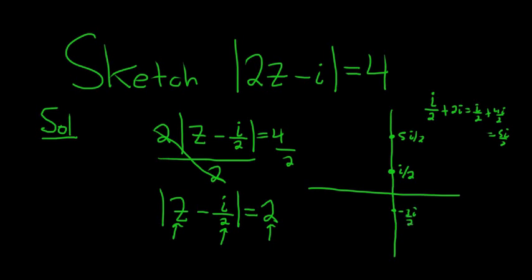And then you can go left and right as well. What you end up getting is a nice big circle of radius 2 centered at i over 2.